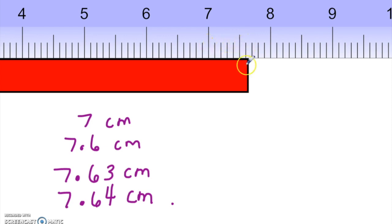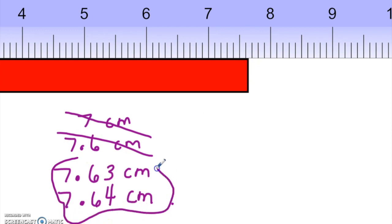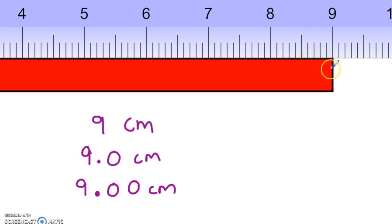With significant figures, you have to include a guessed digit, so we know for sure that just '7' and '7.6' are incorrect — they're missing the uncertain digit. When you're guessing, it is a guess, so both 7.63 and 7.64 would be correct. It doesn't look dead smack in the middle, so either one of these would be a good estimate.